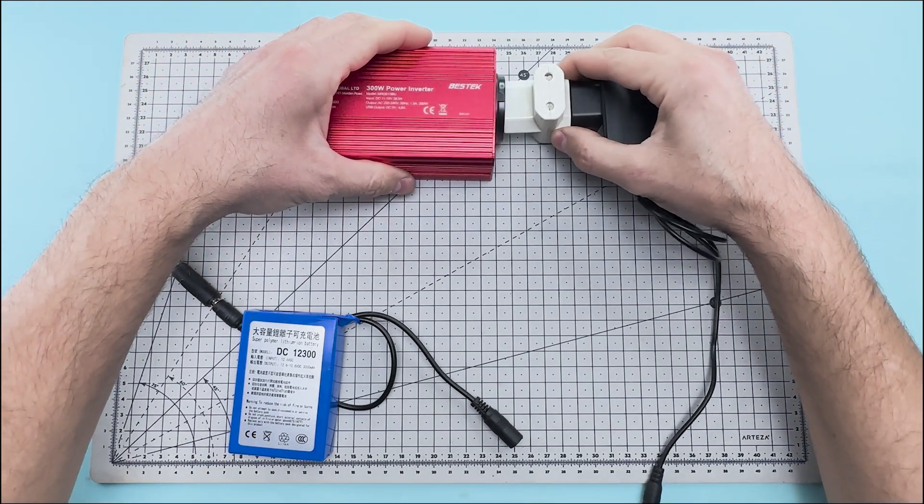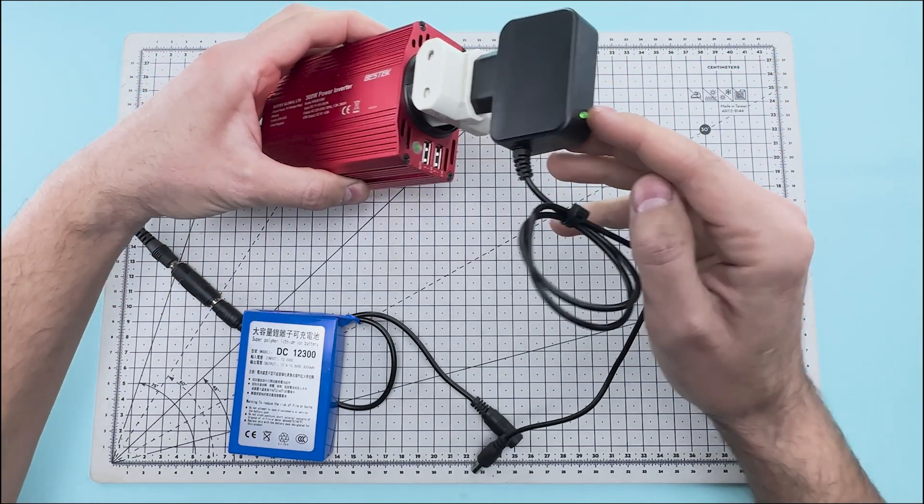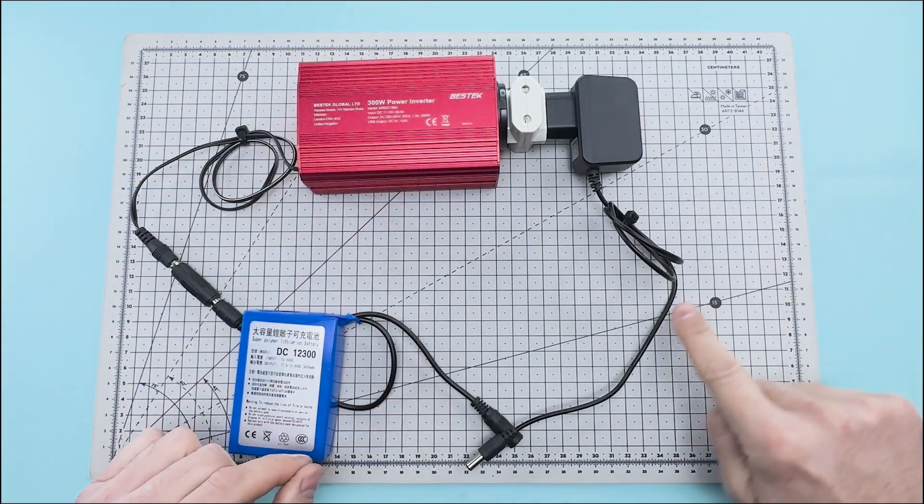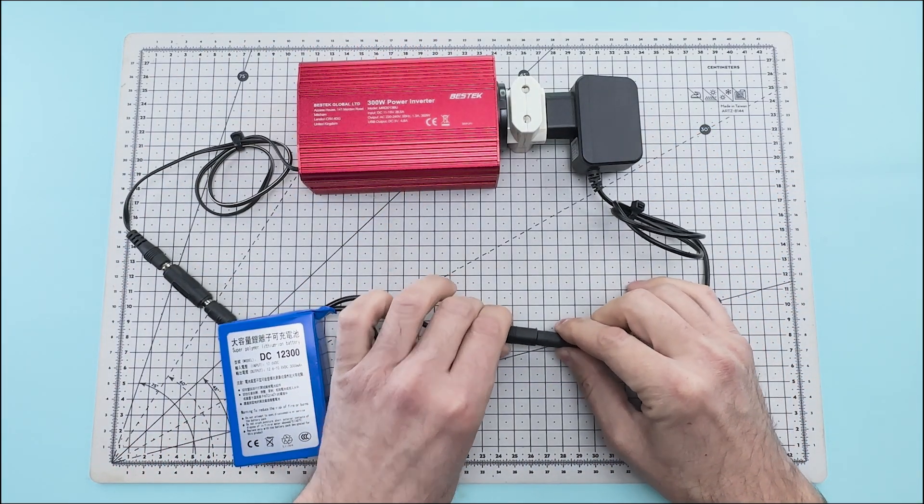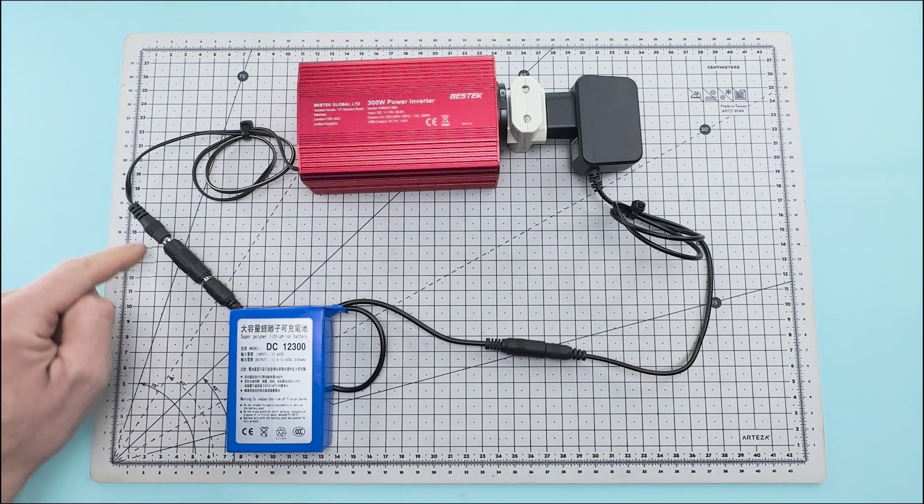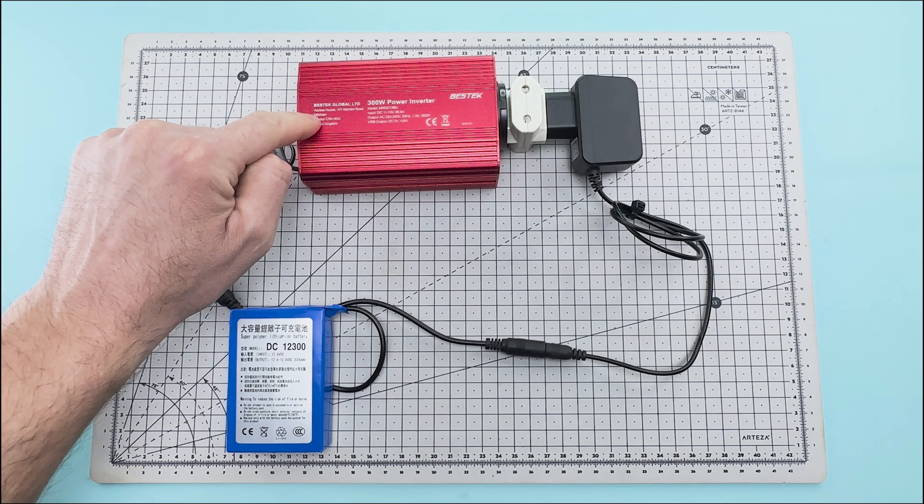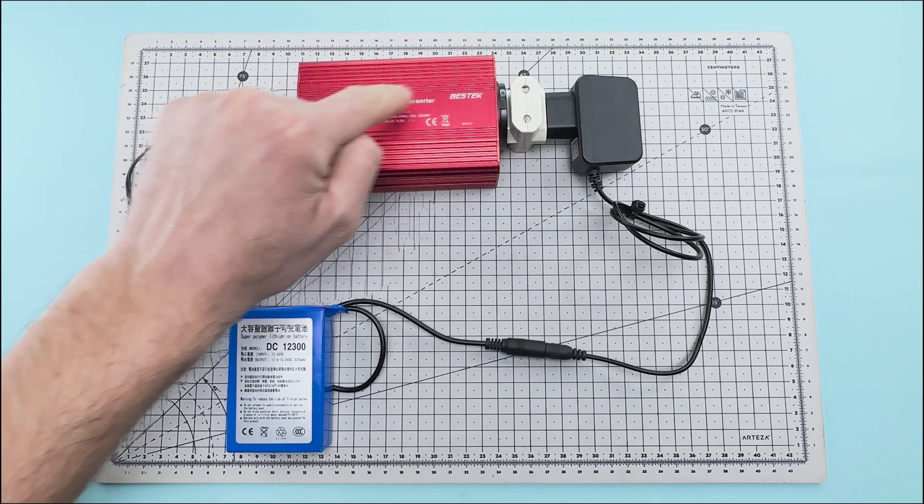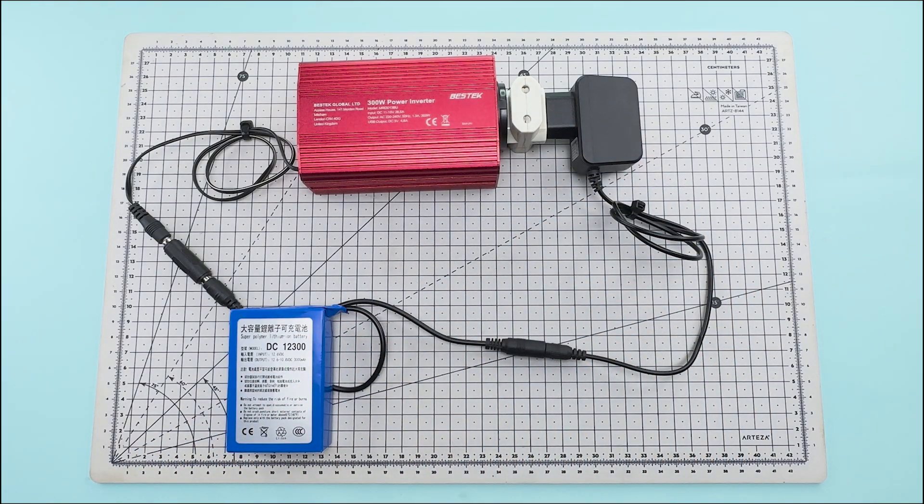Now we connect the battery charger to the power inverter using a multi-plug power strip, and now we plug the charger's connector into the lithium battery. This way, the battery is powering the inverter. The inverter receives the battery's voltage and transforms it into 220 volts of alternating current, and with the transformer, we convert it back to 12 volts of direct current to charge the battery.